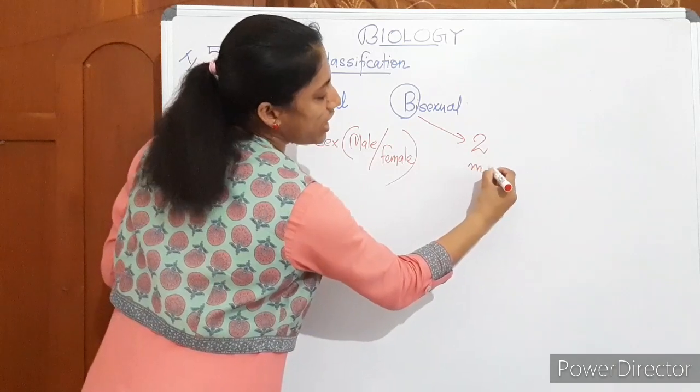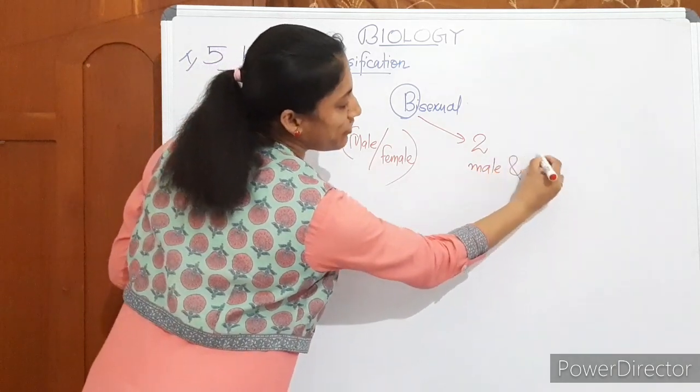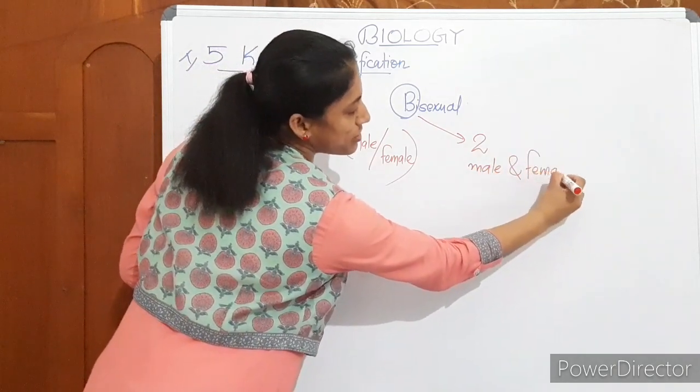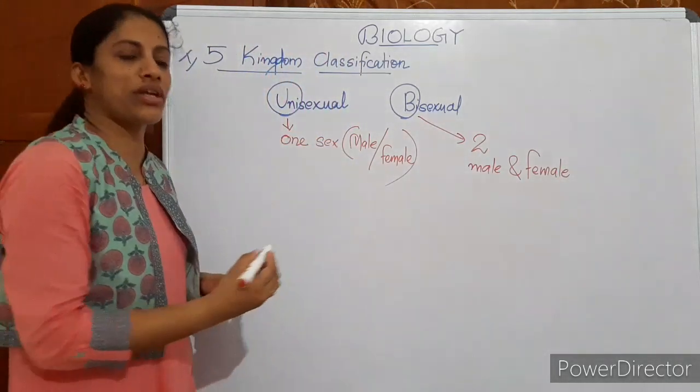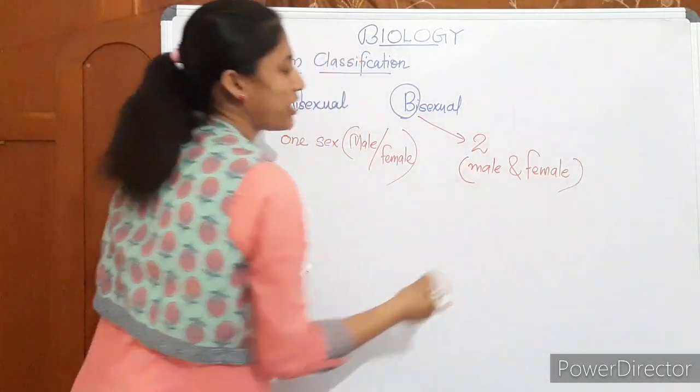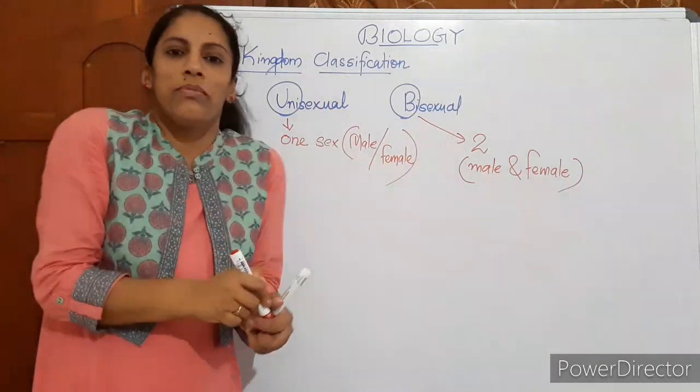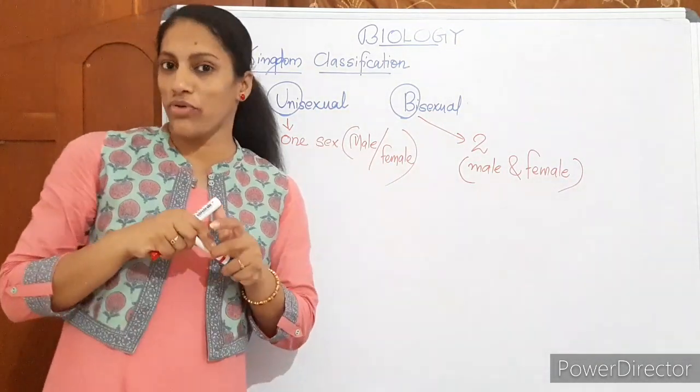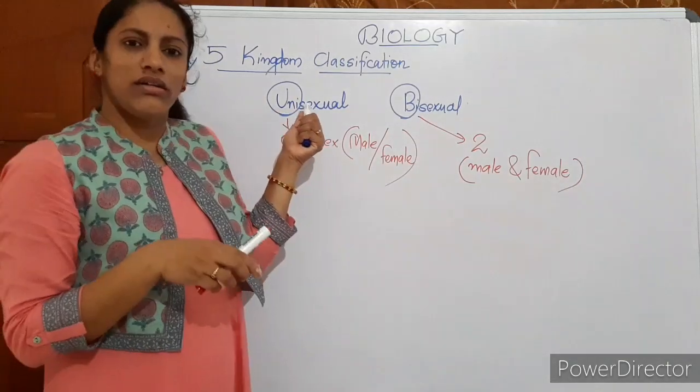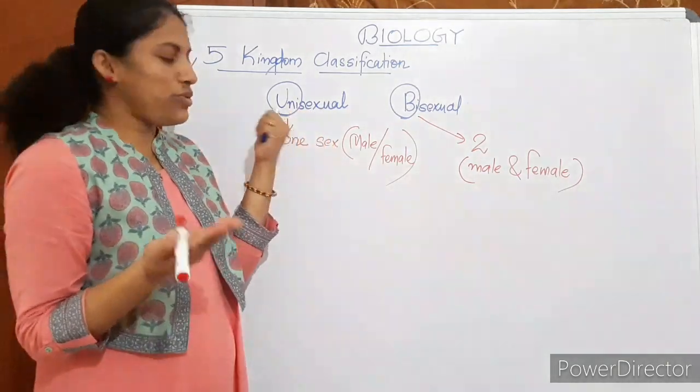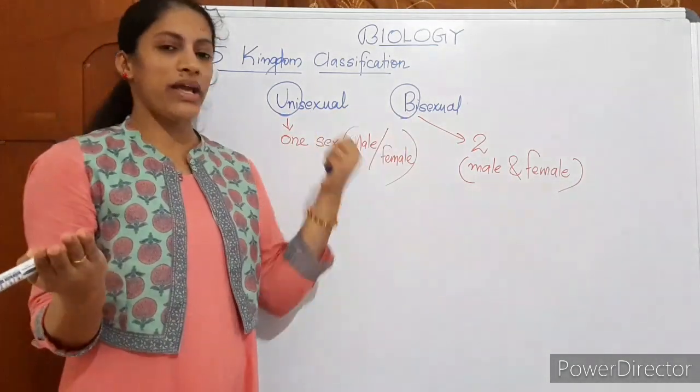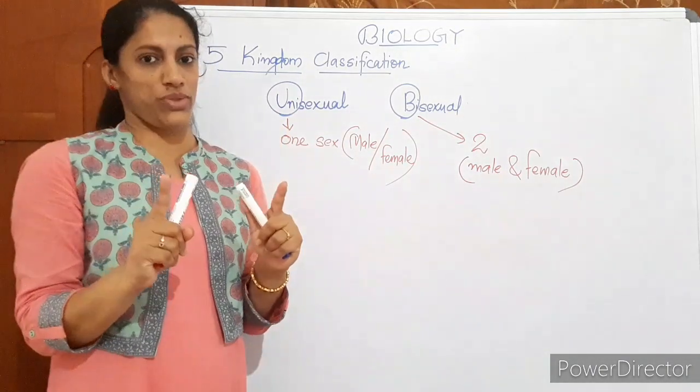Then what is a bisexual organism? Bi means two. That means it has both male and female in one organism. Male and female sex organs are present in one organism. Here is either male or female. There is both male and female parts in the same organism. I think here there is no case of doubt. Uni means single sex. Here, bi means two sex in one individual.